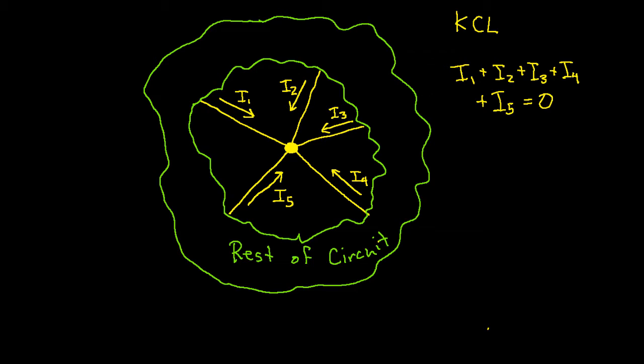Conceptually what this means is that current, which is flowing charge, flowing into the node is the same as the current which is flowing out of the node, which basically means that as much charge flows in as flows out. So I don't have charge accumulating at the node. And so that's basically what we're saying with KCL.